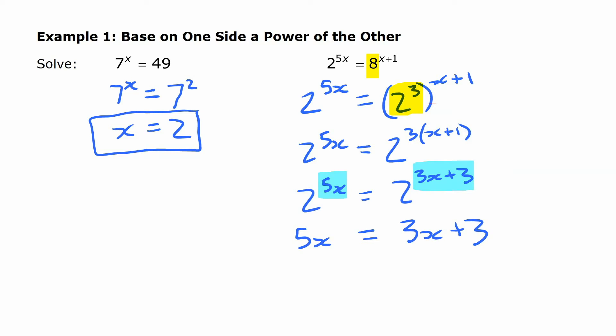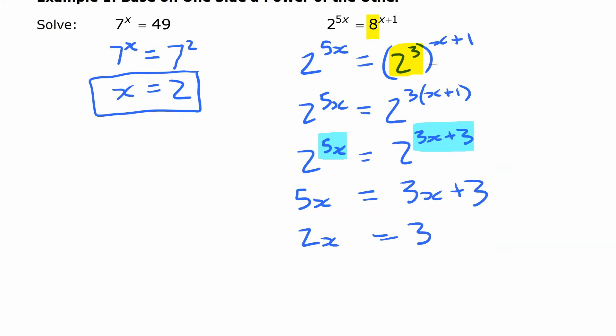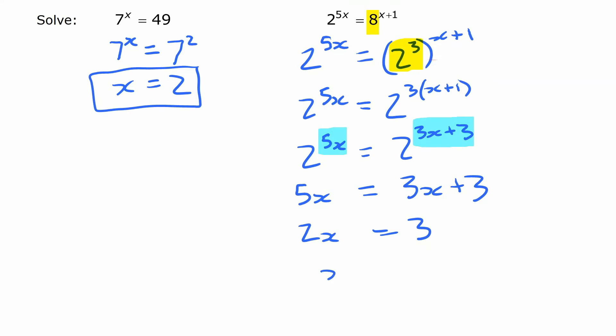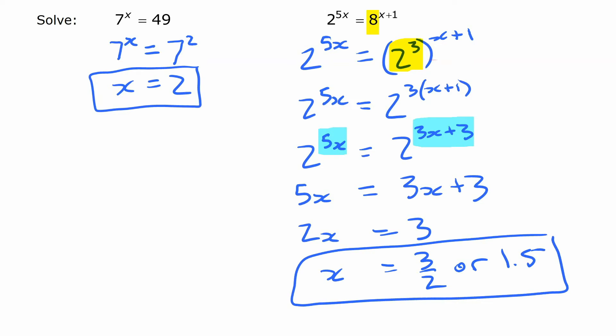We write 5x equals 3x plus 3, and we've reduced it to just a linear equation. Subtracting 3x from both sides gives us 2x equals 3, and then x equals 3 over 2, or 1.5. That's your solution, whether you express it as a fraction or a decimal.